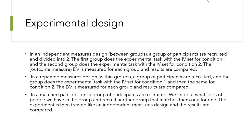Moving to experimental design: an independent measures (between-groups) design is where a group of participants is recruited and divided in two. The first group does the experimental task under IV condition one, and the second group does it under IV condition two. The DV is measured for each group and results are compared.